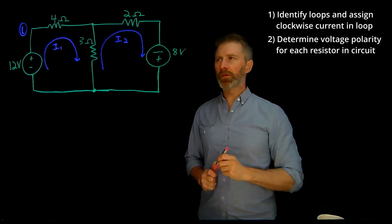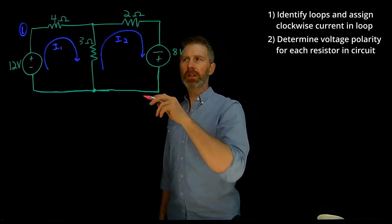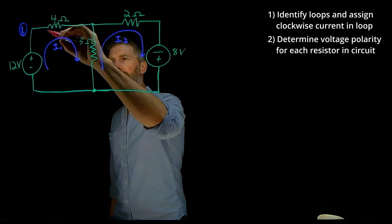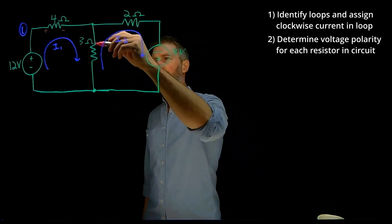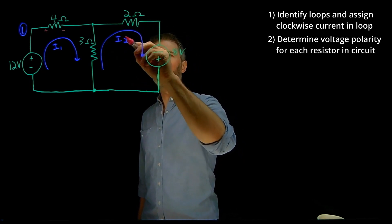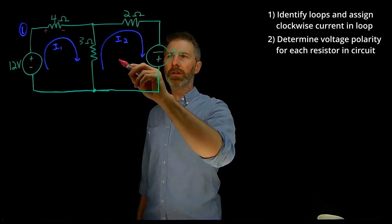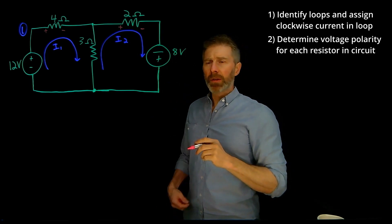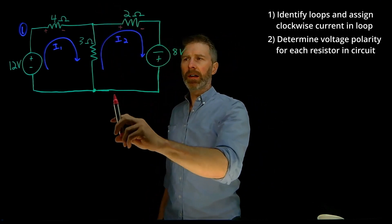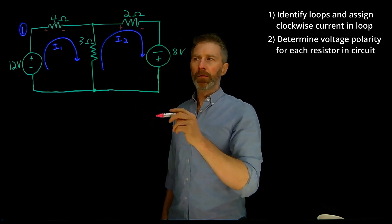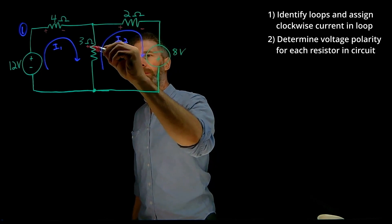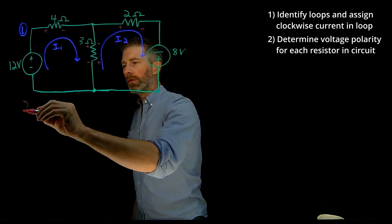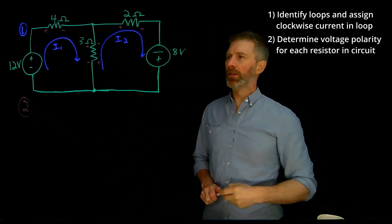Step number two is for each one of the resistors in the circuit, use the loop direction to identify and determine the voltage polarity. If I1 is going in this direction, then the polarity for the voltage across that resistor is positive on one side and negative on the other. The resistor in the middle is a little different — it has I1 current going one direction and I2 current going the other direction, so we identify the voltage polarity for each of those currents and write it on the appropriate side of the resistor.